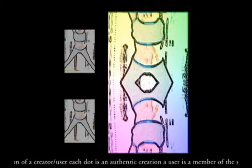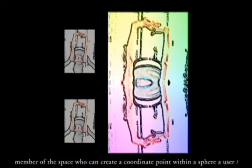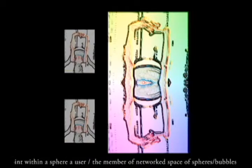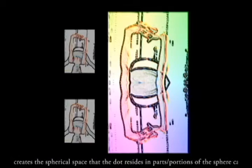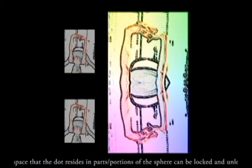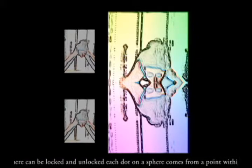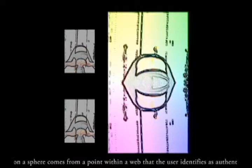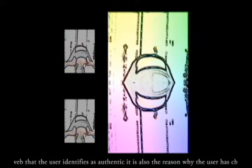Each dot is a representation of a creation of a user. Each dot is an authentic creation. A user is a member of the space who can create a coordinate point within a sphere. A user, the member, has also the possibility to own a sphere.